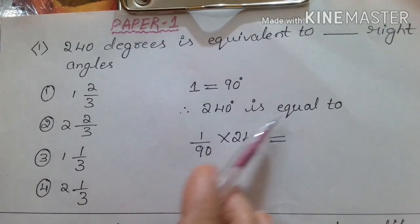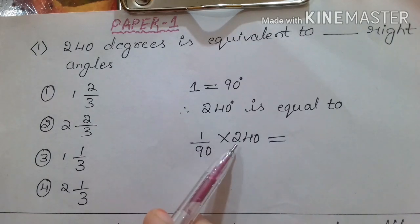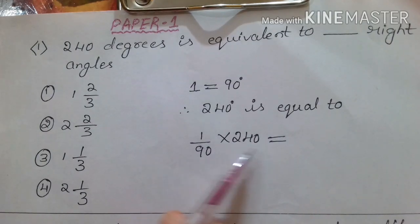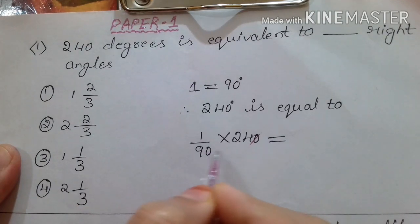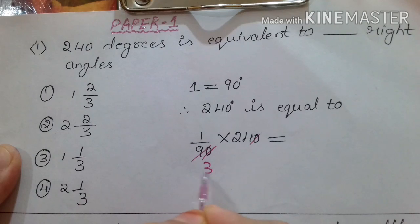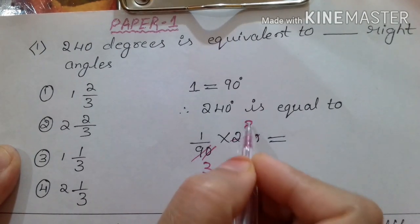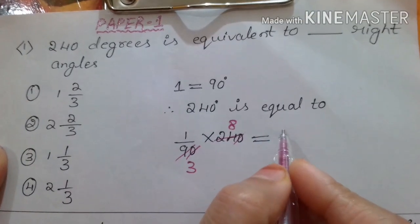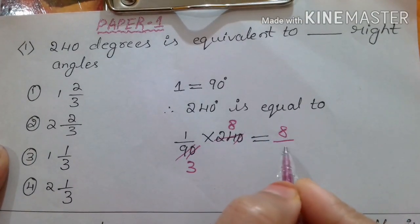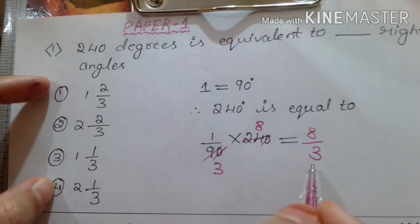240 degrees is equal to 1/90 into 240 degrees. We cancel the zeros: three 8s are 24, so 8/3 is the answer.